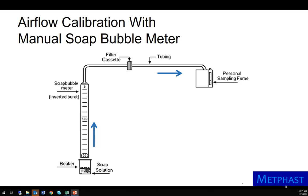This meter can be a primary standard if the volume of the burette is traceable to NIST. To calibrate air flow, the soap bubble meter is connected to the end of the sampling train. The sampling train is operated with the same collection media as will be used in the field — here, a filter cassette with a filter. The sampling pump is warmed up for several minutes, then the air flow is measured using the soap bubble meter.